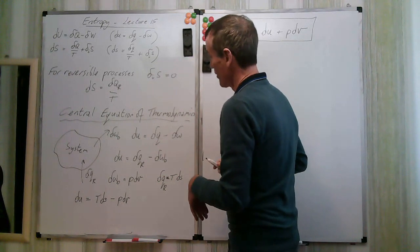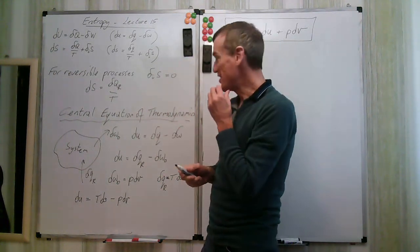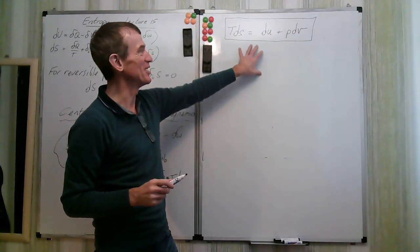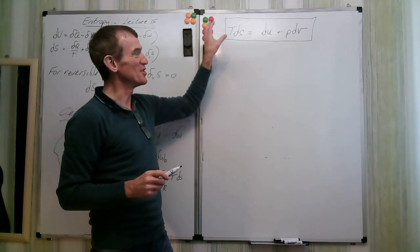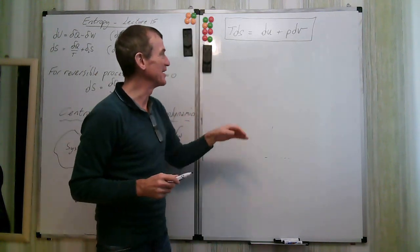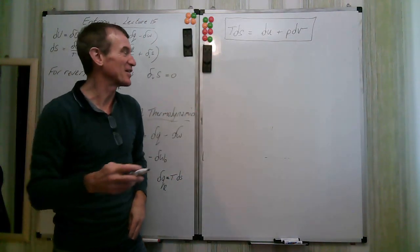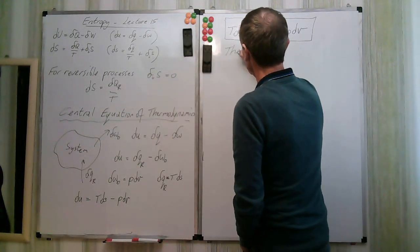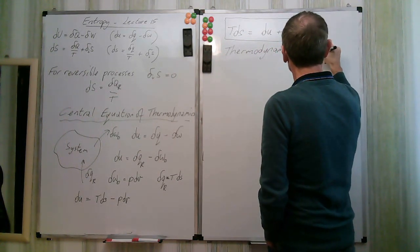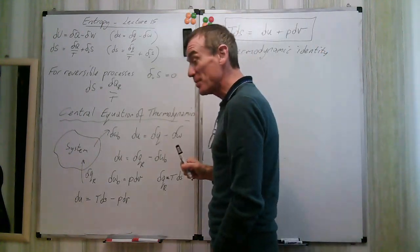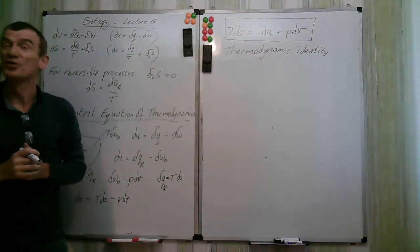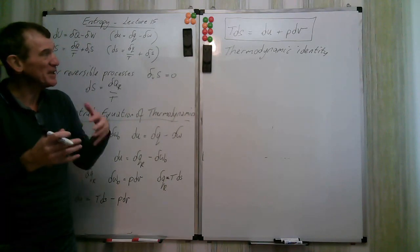Rearranging gives us T ds = du + p dv. This is our central equation of thermodynamics. It's quite important — even though I assumed energy is added reversibly and we have displacement work only, once we arrive at this relationship we can see that it only relates properties. Therefore it must be universal — it's in fact a thermodynamic identity.